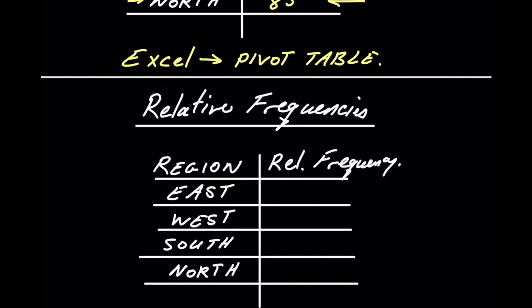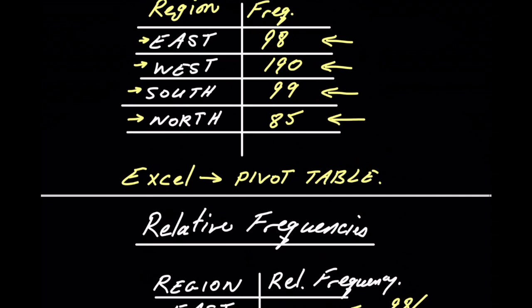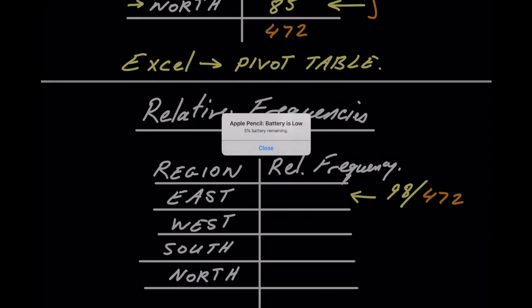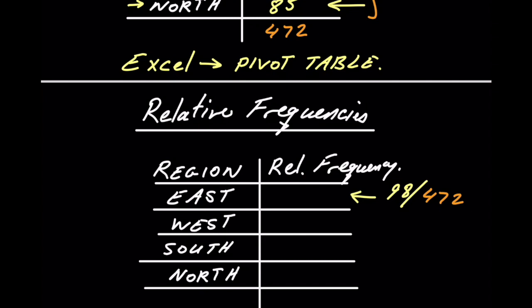The next thing we want to talk about is relative frequency. Relative frequency gives the percentage of transactions from each value. For example, to find the relative frequency for east, I take its frequency and divide by the total. Adding all frequencies gives a total of 472, which is also displayed in the pivot table. So 98 divided by 472 is about 21 percent.